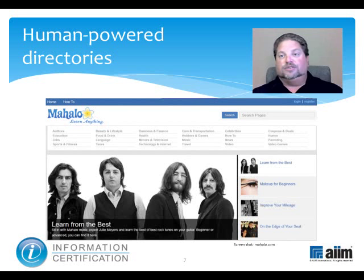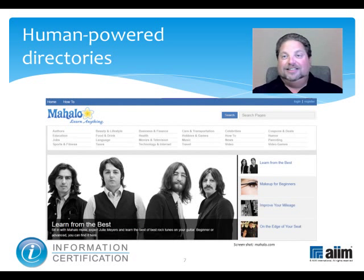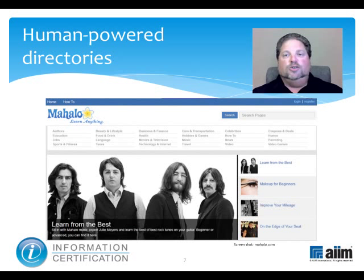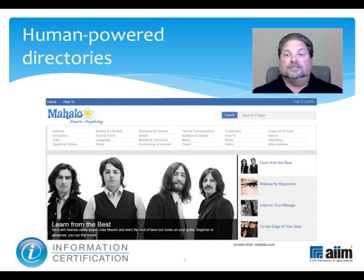Human-powered directories are search listings that are compiled by human beings. Users can submit short descriptions to the directory of the sites they like, or editors can write them for the sites they review, as well as organize the search results. The search engine then looks for matches only in those descriptions. This can greatly speed the process, but the human element can make the results highly subjective until and unless enough people are involved to balance out their perspectives. The example on the screen here is from Mahalo.com, a human-powered search engine.